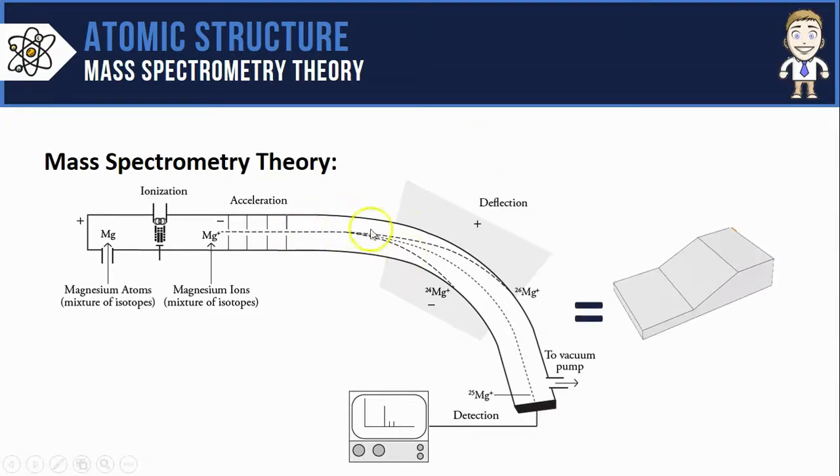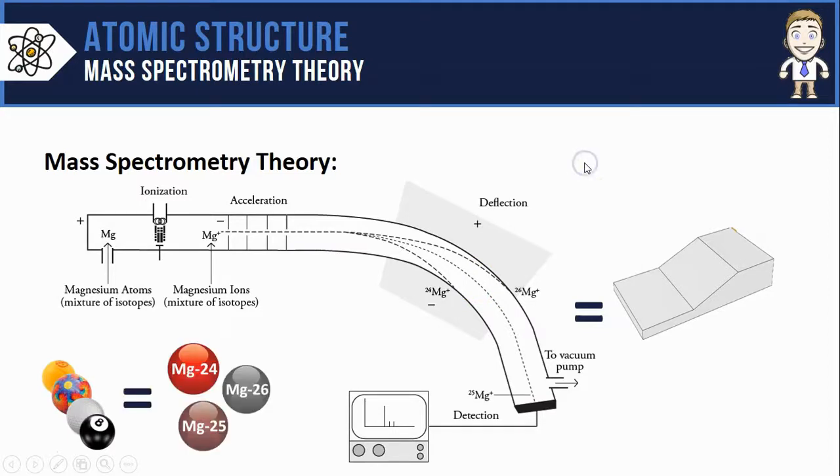Instead of a ramp, we've got this long tube. Instead of balls with different masses, we're going to put isotopes of different masses through the tube. Instead of deflecting with a hair dryer, we've got a positive and negative electromagnetic field. Instead of some cups at the bottom of the ramp, we've got a detector plate at the end of the tube.